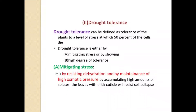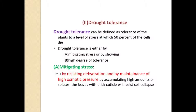The second major drought adaptation is drought tolerance. Drought tolerance is defined as the tolerance of the plant to a level of stress at which 50% of the cells die. Drought tolerance is achieved either by mitigating the stress or by showing a high degree of tolerance.